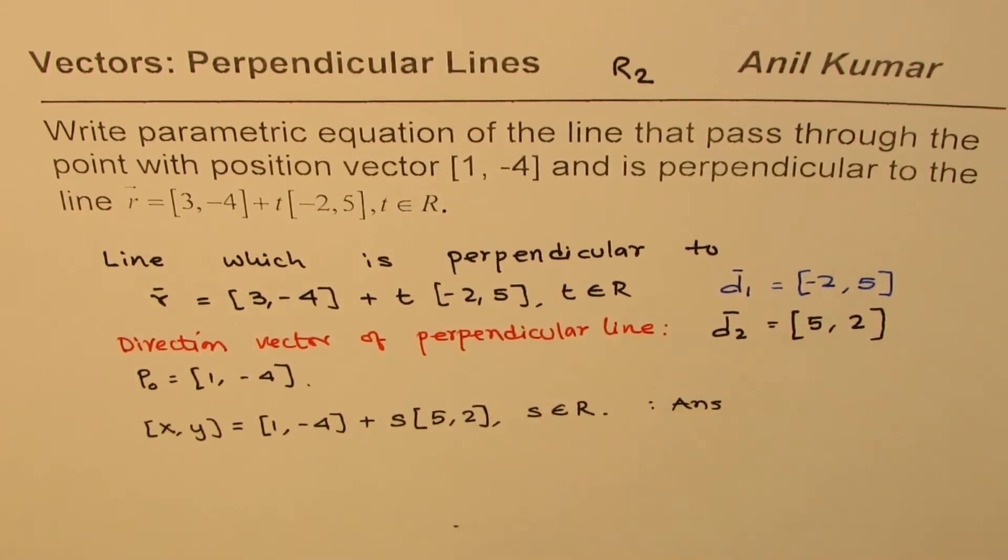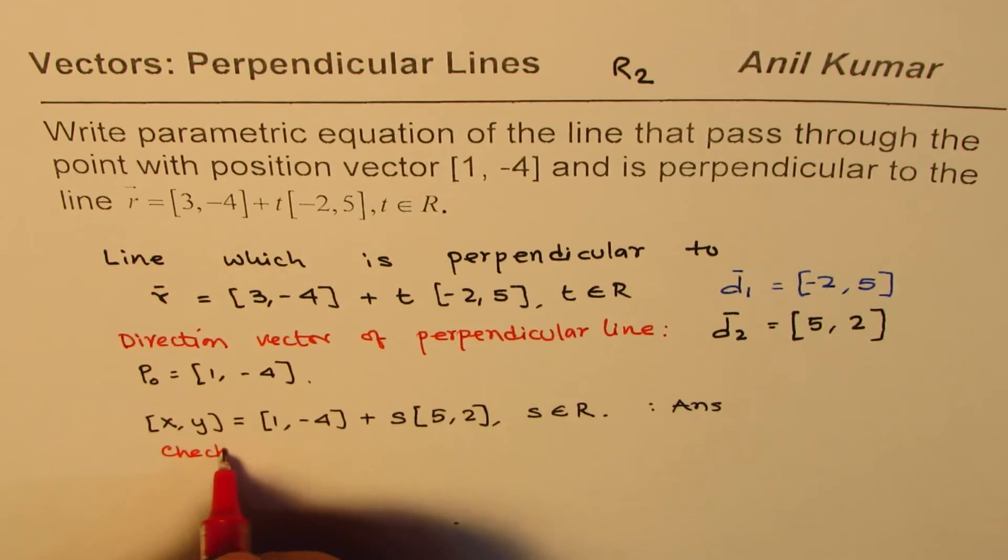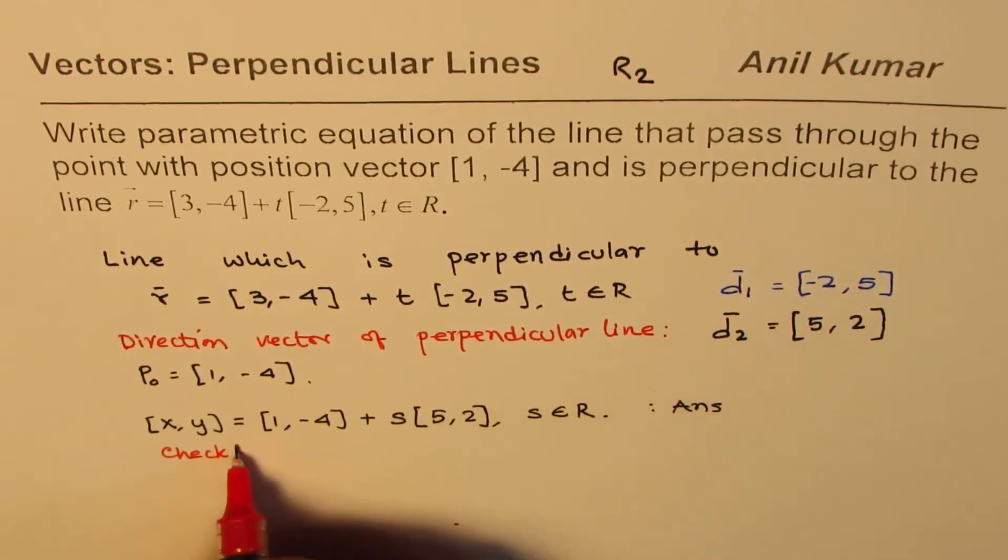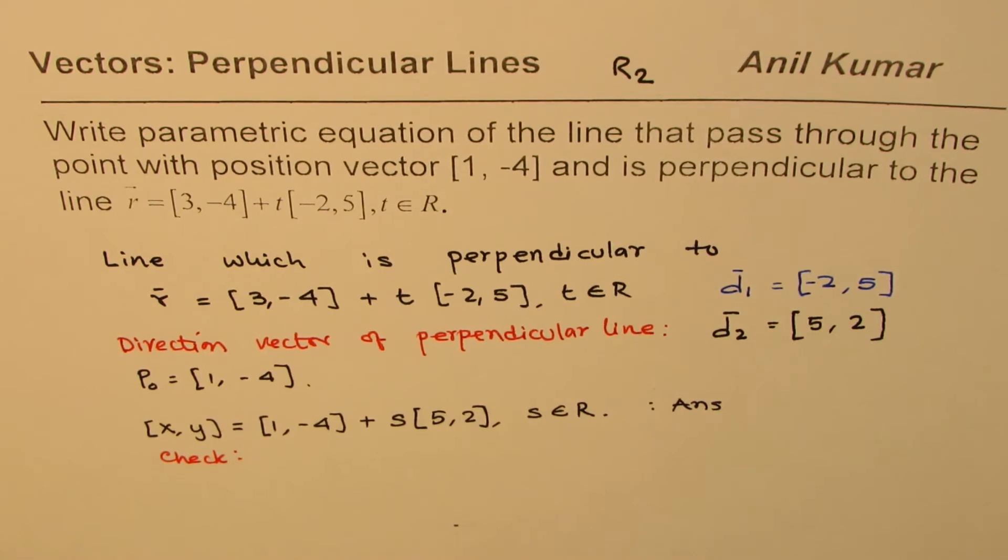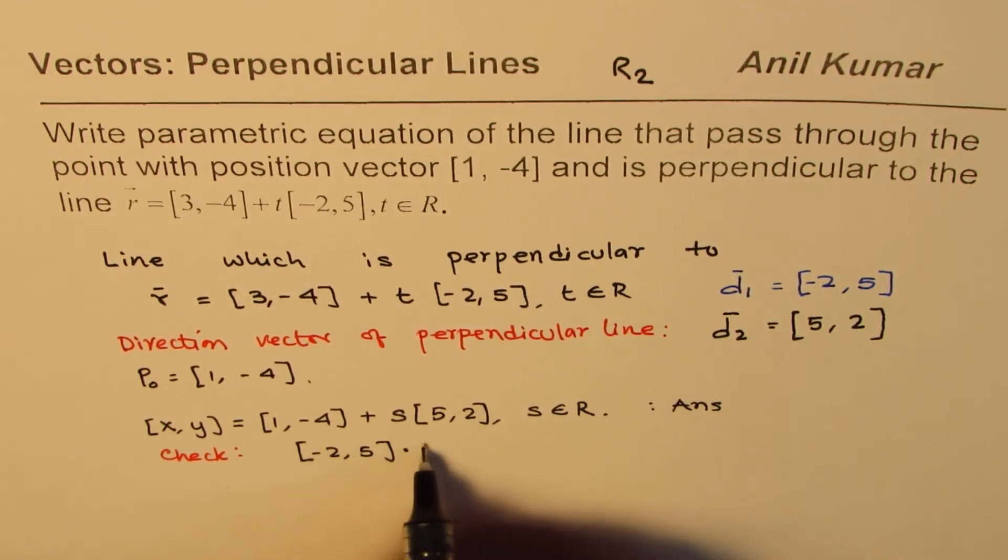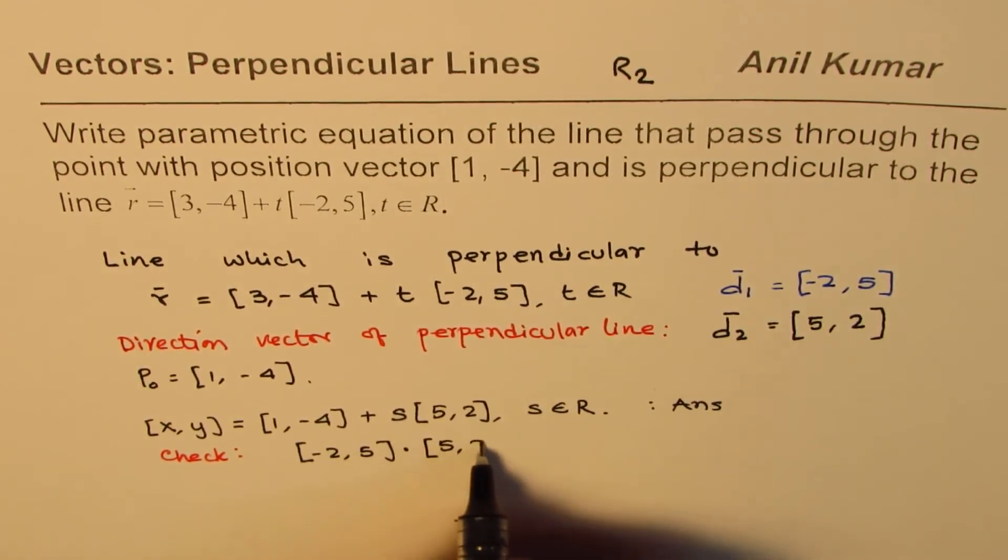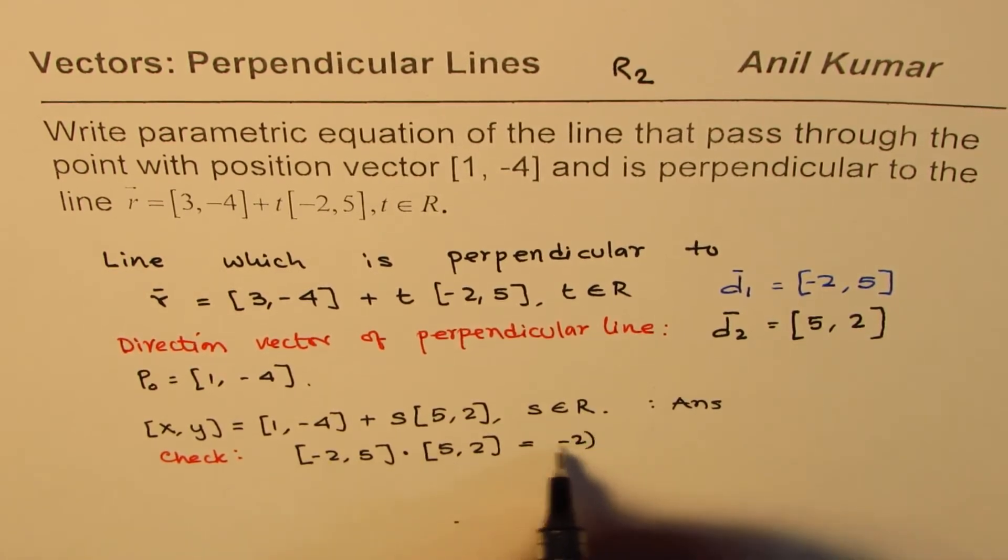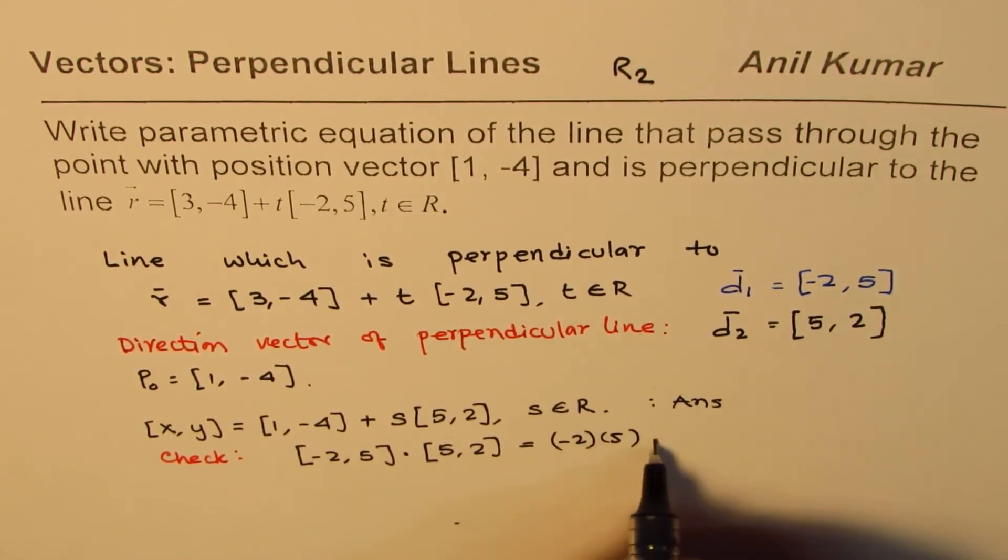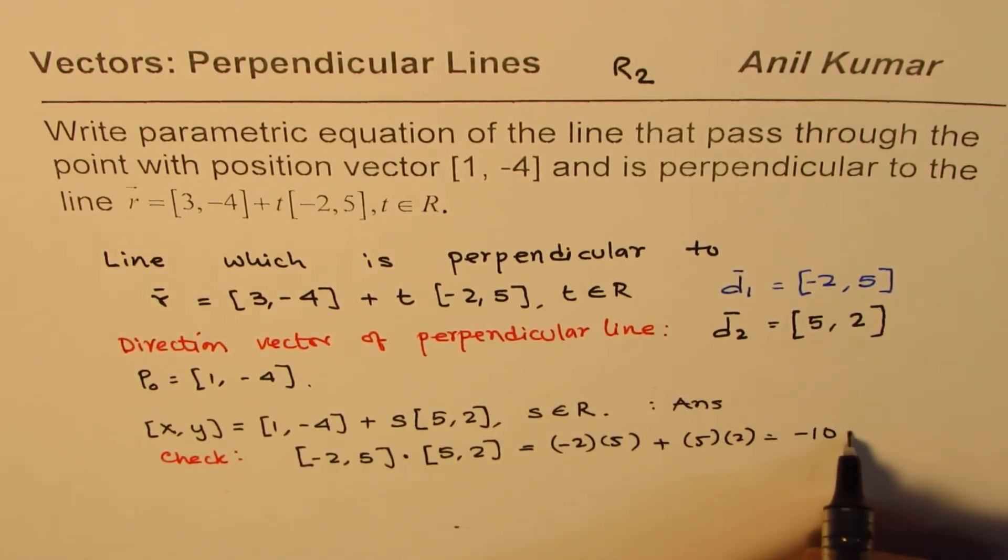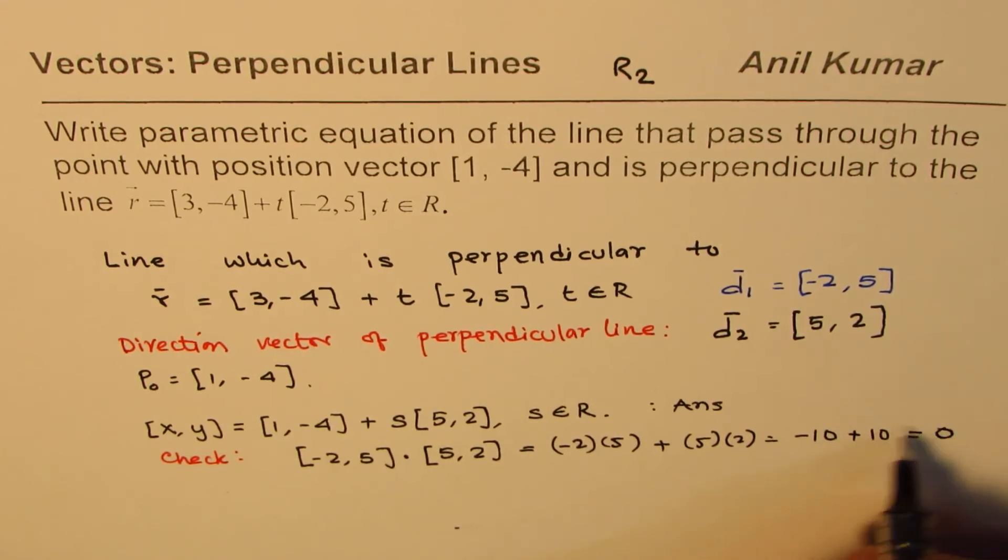Now, what you need to do is check if d1 and d2 are perpendicular. How do you check it? You can check by finding the dot product. So let's find the dot product of [-2, 5] and [5, 2]. So -2 times 5 plus 5 times 2. That is -10 plus 10, it is 0.